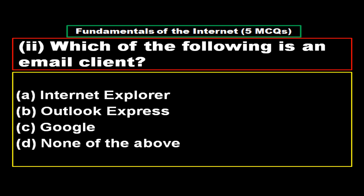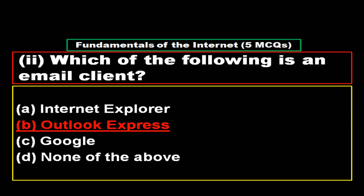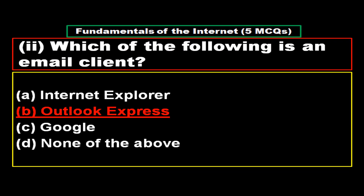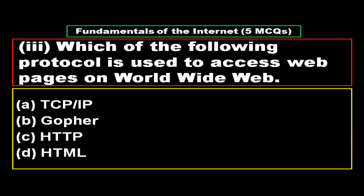Question 2: Which of the following is an email client? Option A: Internet Explorer, option B: Outlook Express, option C: Google, option D: none of the above. The right answer is option B, Outlook Express.